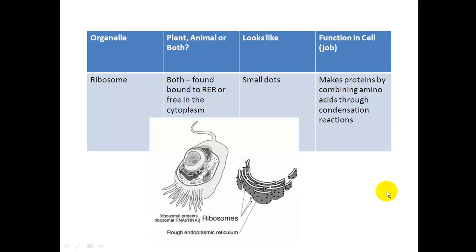The next one is a ribosome. Ribosomes can be found in two different areas. They can be bound to the rough ER as we just discussed, or they can just be free in the cytoplasm. So they look like small dots, they're easy to see. And their job is to make the protein. So they are doing condensation reactions, putting the amino acids together to make protein.